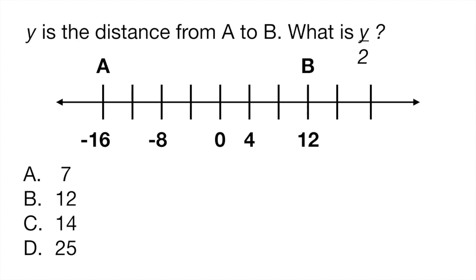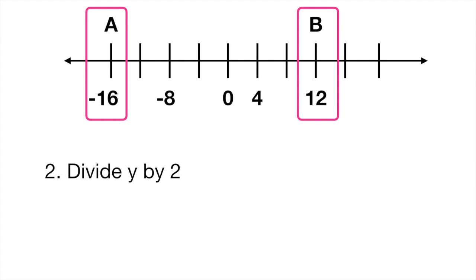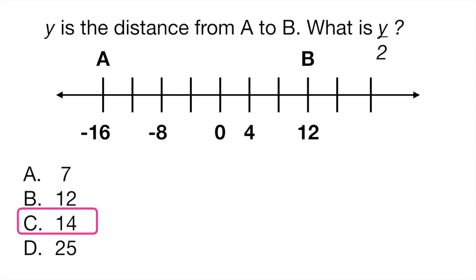When you answer problems where they ask you to find the distance, remember two things. First, you have to find the distance between points A and B, and this distance is always going to be positive. The way you find it is you subtract the distances, so it would be 12 minus negative 16, which gives you 28. Once you've found that, it's easy to answer the question — they're asking what is y divided by 2, so you take 28 and divide by 2, which gives you 14. The answer is C.